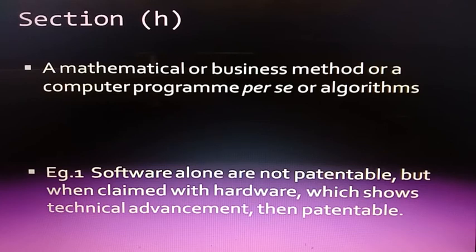Section 3H: A mathematical or business method, or a computer program per se, or algorithm, are not patentable. Software alone is not patentable, but when claimed with hardware and showing a technical advance, it is patentable.